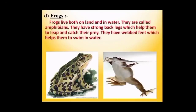Now let us look at the adaptations of ponds and lakes habitat. Have you seen plants growing in ponds, lakes, rivers and even some drains? Have you seen frogs living both in water and on land? They are called amphibians — organisms that can live both on land and in water. Frogs have strong back legs which help them to leap and catch their prey. They have webbed feet, as you can see in the picture, which help them to swim in water easily.